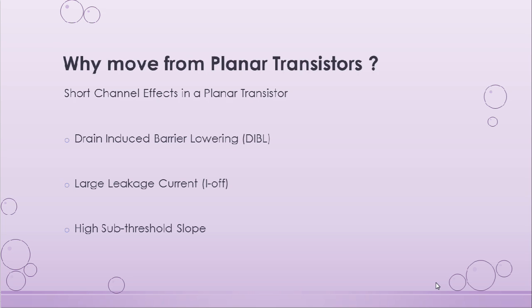This begs the question: why would we want to move from a planar transistor device to a 3D device in the first place? Well, the collective response would be to overcome the short channel effects present in a planar transistor. These include drain induced barrier lowering, or DIBL, the large leakage current that flows when the transistor is in the off state, and finally the large subthreshold slope of the planar transistor.